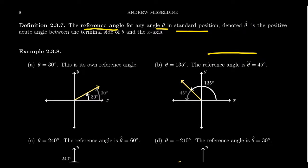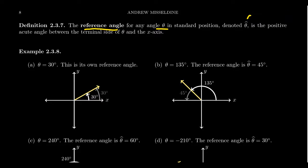You draw a little hat symbol on top of the theta. This is not a universally accepted notation. Some people will do things like theta prime, or ref of theta, or a bunch of other things. Some people don't even give a notation. But just so you're aware, in our lecture series, if you ever see a theta hat, that will be the reference angle.